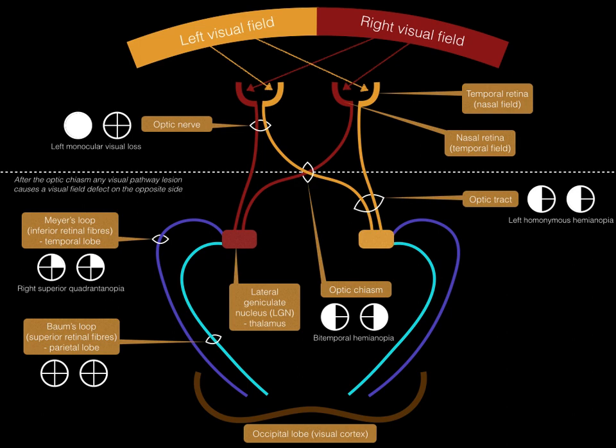So what visual field defect would you expect if there was a lesion affecting Baum's loop in the left parietal lobe? A right inferior quadrantanopia. Together, the fibres of the visual pathway extending from the LGN to the visual cortex are called the optic radiation.